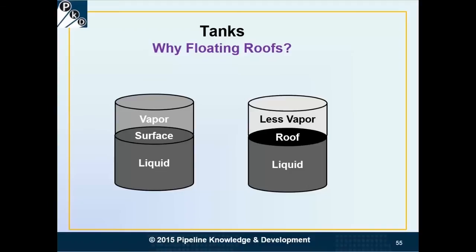I've got a couple of drawings here. On the left I've drawn a tank with liquid, and if there's nothing to keep the liquid from vaporizing, it's going to vaporize and fill up the empty space between the surface and the roof. As the liquid goes up and down, more vapor is going to be generated or displaced out the top. If we're filling the tank, all the vapor above the surface gets displaced to the atmosphere. If we empty the tank, the surface comes down, more air gets drawn in, and more of the liquid vaporizes. So the reason we put roofs on tanks is to control vapor.